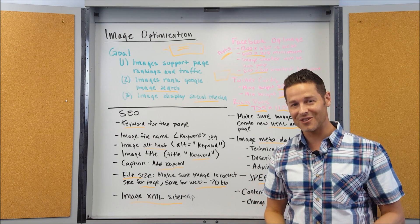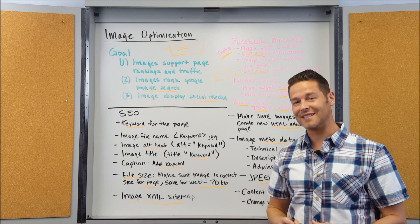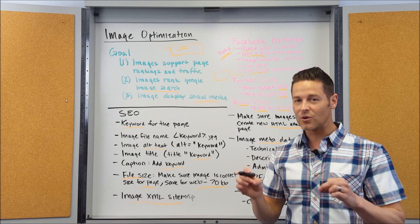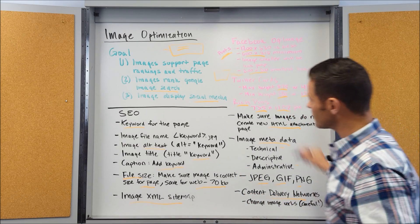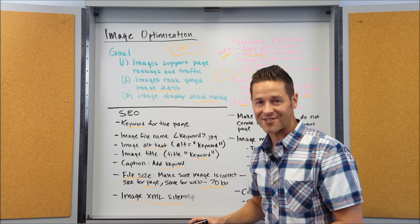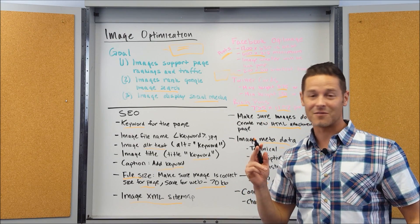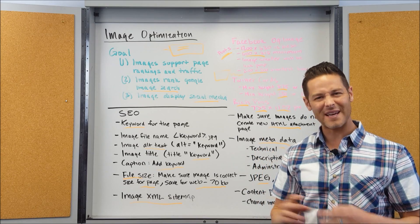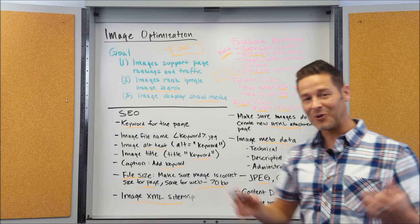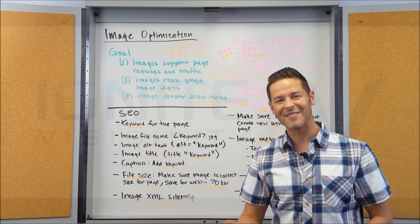Overall, these are the most important things that you want to think about for image optimization. This takes into account SEO, this takes into account some basic web dev stuff, page speed, the technical aspects, as well as social media. I hope this was interesting to you and I can't wait to see you for the next training video. Have a great day.